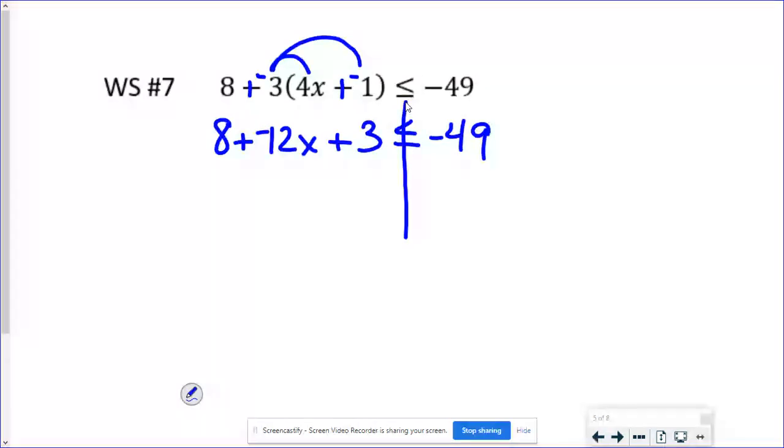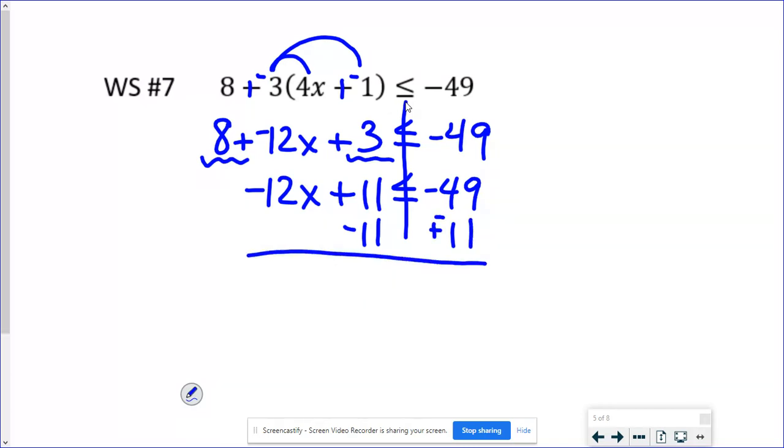This time I only have x's on just this one side. I can clean this up and make this a little easier. I like to put my variable first. I would have 8 plus 3 is 11. And then to get rid of adding 11, I would subtract 11 or add a negative 11. So I have negative 12x is less than or equal to negative 60. When I divide by this negative 12, that's the thing that's going to flip my sign. So I'm going to get that x is now greater than or equal to, negative divided by negative is positive, and 60 divided by 12 is 5.